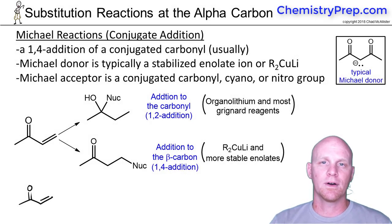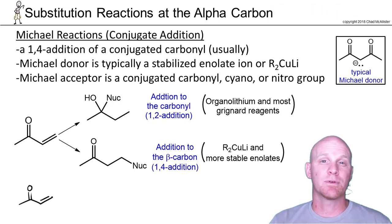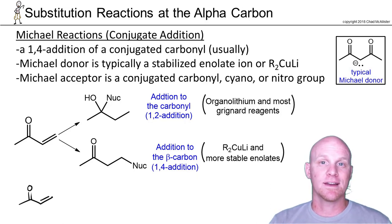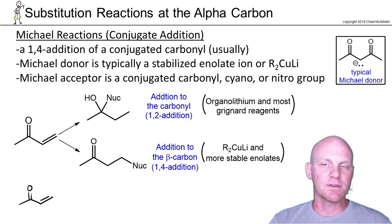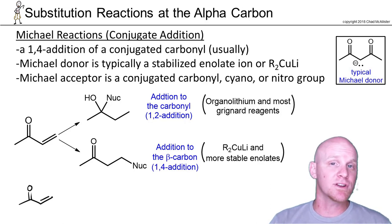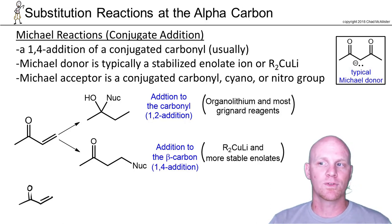We'll take a brief moment and talk about an anomalous reaction in this chapter called a Michael reaction. A Michael reaction is an example of what we call conjugate addition, or 1,4 addition. The reason it's an anomaly here is that it is not a substitution reaction at the alpha carbon — it's a substitution at the beta carbon. It's used in combination often with one of our standard alpha reactions.